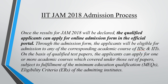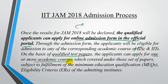Once the results are in for 2018 and you are selected, you can apply via the online admission form in the official portal. Through the admission form, applicants will be eligible for admission to corresponding academic courses at IISc and IITs, on the basis of qualified test papers. Applicants can apply for one or more academic courses covered by those test papers, but remember to fulfill the minimum educational requirements and eligibility criteria of the admitting institutes.